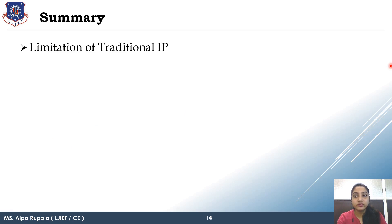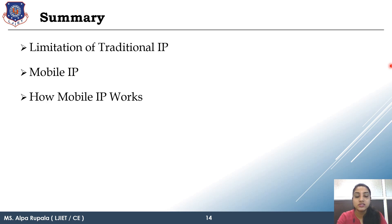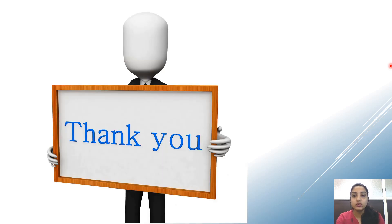In summary, this lecture covered the limitation of traditional IP — the four parameters (TCP port number of sender, IP address of sender, TCP port number of receiver, IP address of receiver) must all be static, but mobile movement changes the IP address, making traditional IP insufficient. Mobile IP is therefore required, and it works through three processes: tunneling, registration, and discovery. These processes will be explained in detail in the next lecture. Thank you, we will meet in our next lecture.